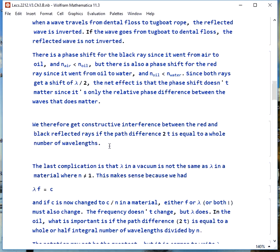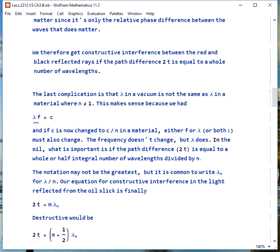So what we'll get is constructive interference if the path difference between the two, which is 2t, equals a whole number of wavelengths. There's one other complication and that is that the wavelength that we might think of as being associated with this light will change when it's in something other than a vacuum. If we look at our connection between speed of light and frequency and wavelength, we see that in a material other than a vacuum, c changes to c divided by n.